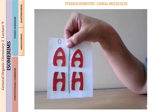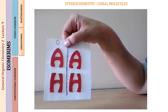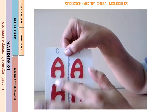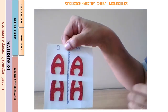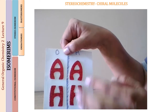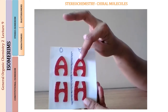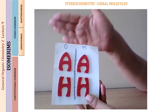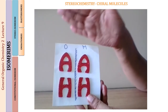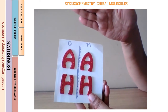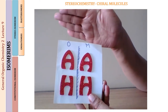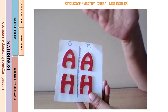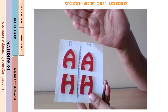Let us understand chiral and achiral objects with the help of English alphabets. On screen you can see the two alphabets A and H. There is a line in between showing the mirror. The object A and its mirror image, the object H and its mirror image — the object and the mirror image are identical to each other. When they are identical, we call such an object and its mirror image achiral, just like the flask.